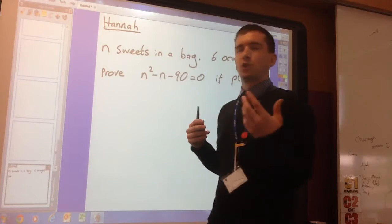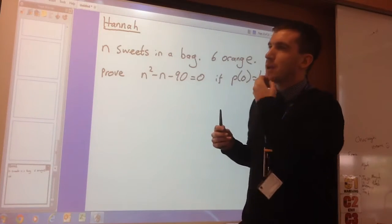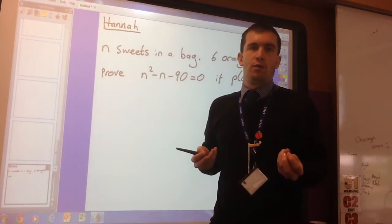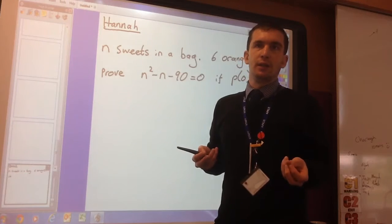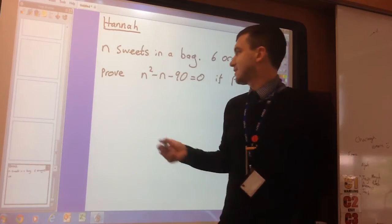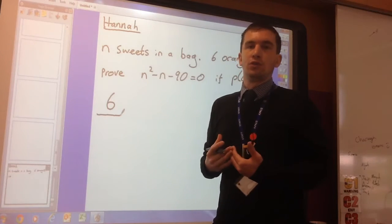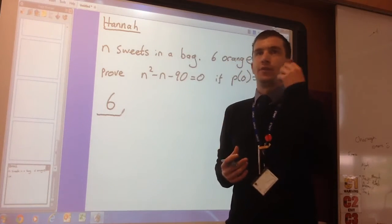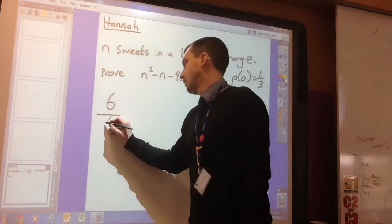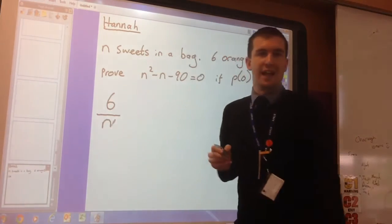So that's the first thing we've got to think about which is quite difficult. If we think about the probability of her getting one orange sweet out of the bag, well that's going to be the six and there's N in total. So it's always the probability of something happening is always the amount of something divided by the total N.